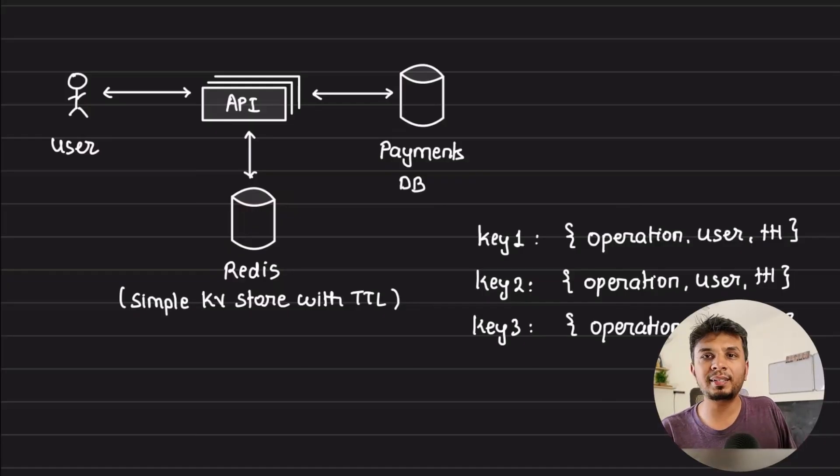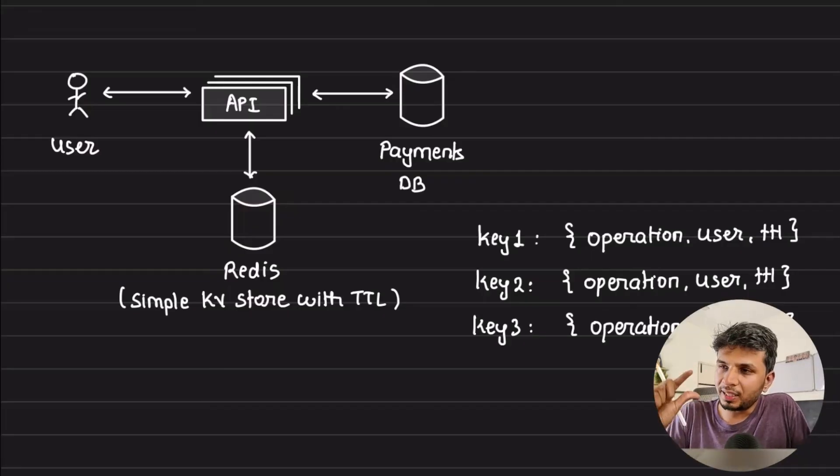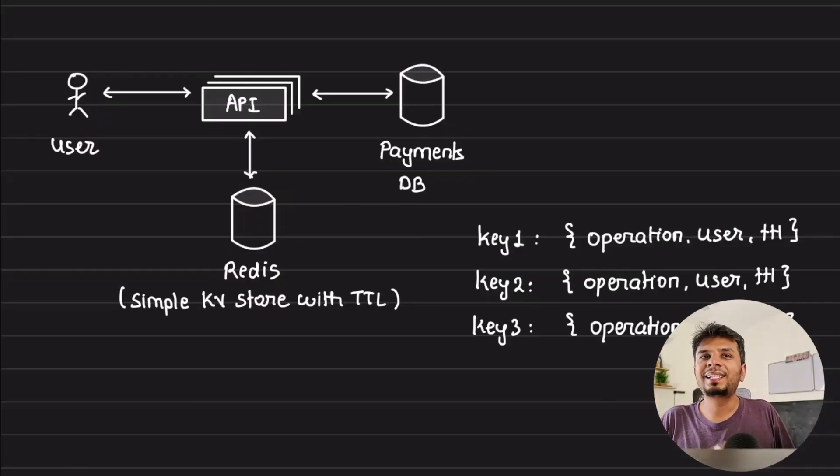All of this is taken from Stripe's engineering blog which I have linked in the description down below. I would highly recommend you to check out the Stripe API documentation to understand what all APIs require you to pass idempotent keys and what all APIs are just normal plain simple APIs that do not require you to pass such keys. You can very clearly see the difference of which APIs are critical and which APIs are not. I hope you found it interesting, I hope you found it amusing, and that is it for this one. I'll see you in the next one, thanks.